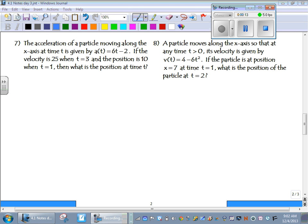And in these problems, 7 and 8, we're given an acceleration or a velocity for number 8, and we want to find the original position function. Remember that velocity is the derivative of position, acceleration is the second derivative of position. So it's just kind of giving us a little bit of meaning behind the problems that we've been doing up until now.